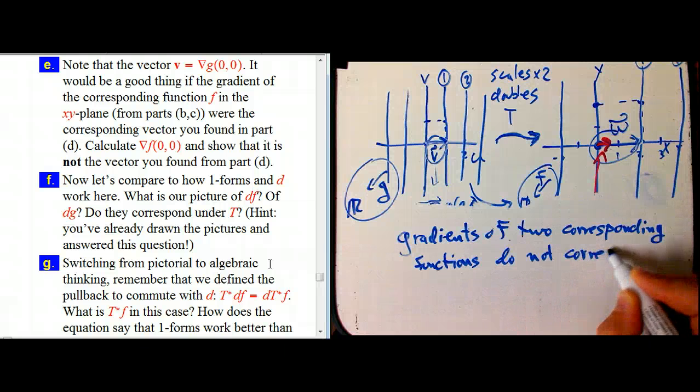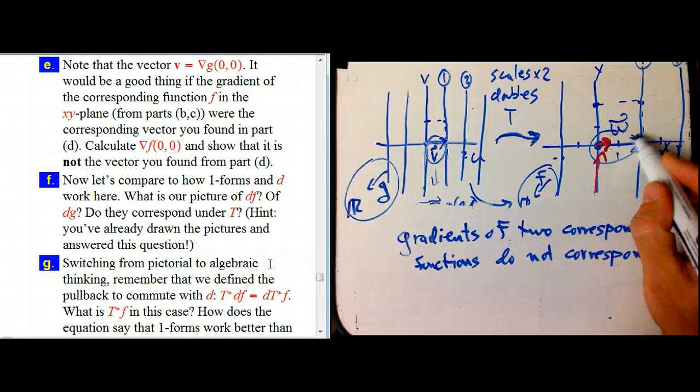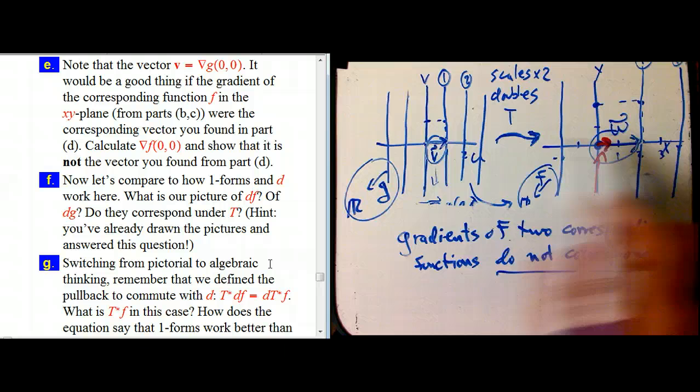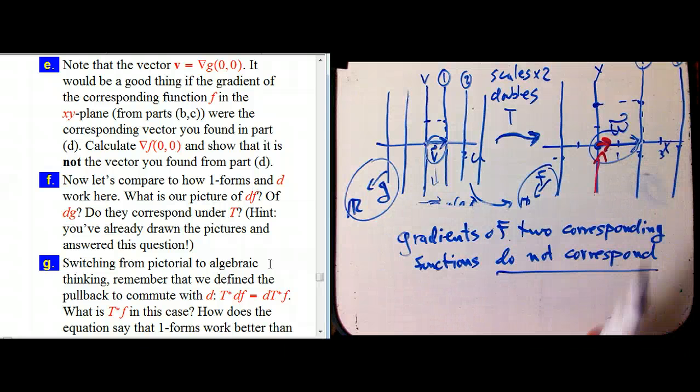And by that, I mean when I do the very natural operation of taking this arrow and just putting it on this picture by just magnifying it by a factor of two, it's not the same as the gradient of f. So that's a problem. That's really something that's not good.